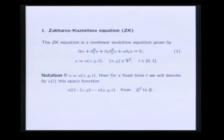From now on, for a fixed time T, we will denote by U of T this space function from R2 to R.